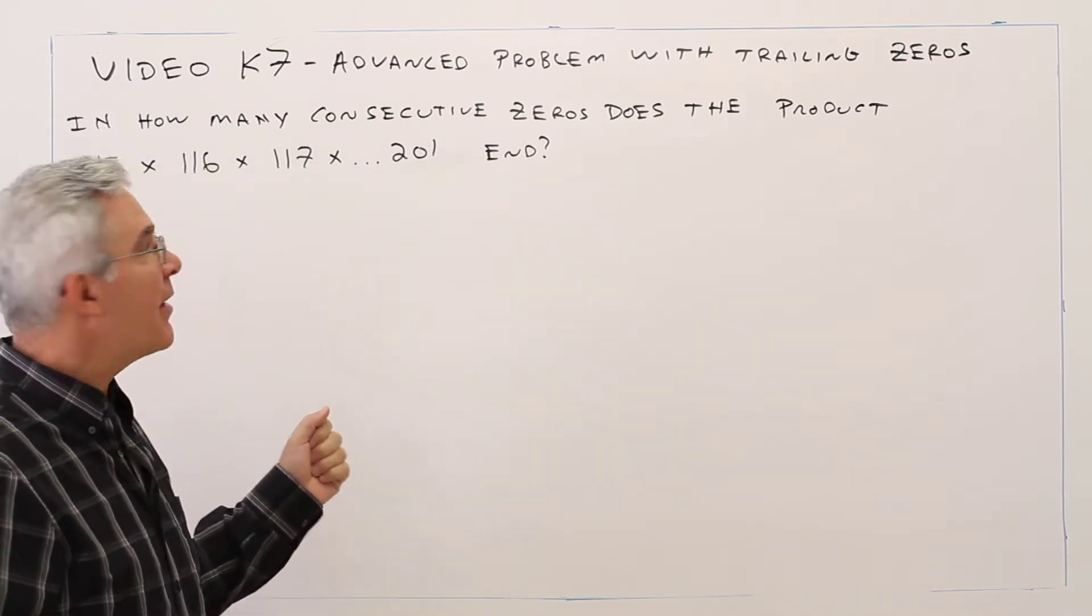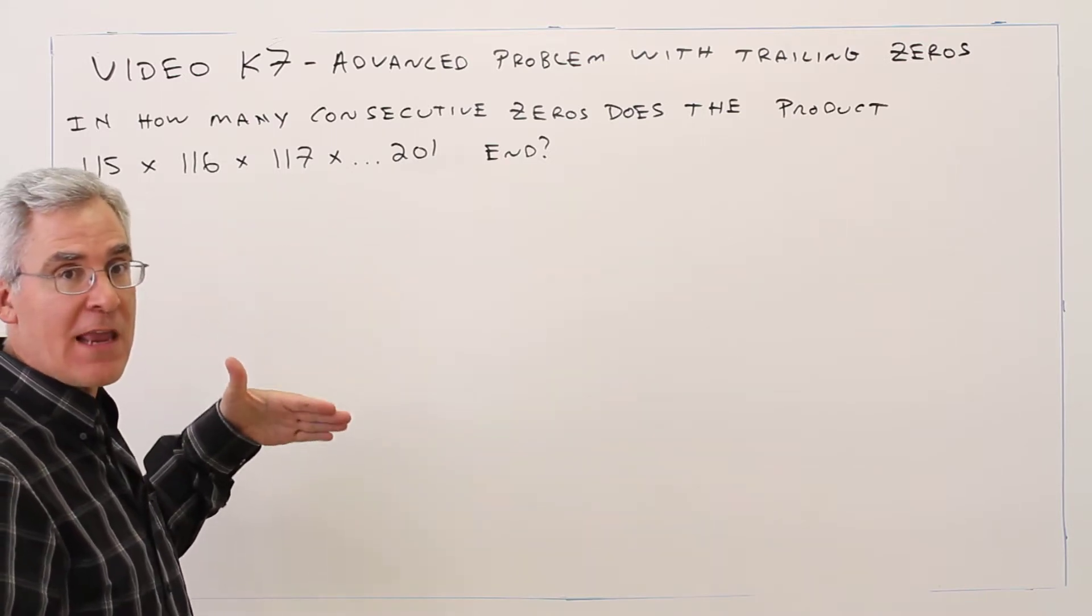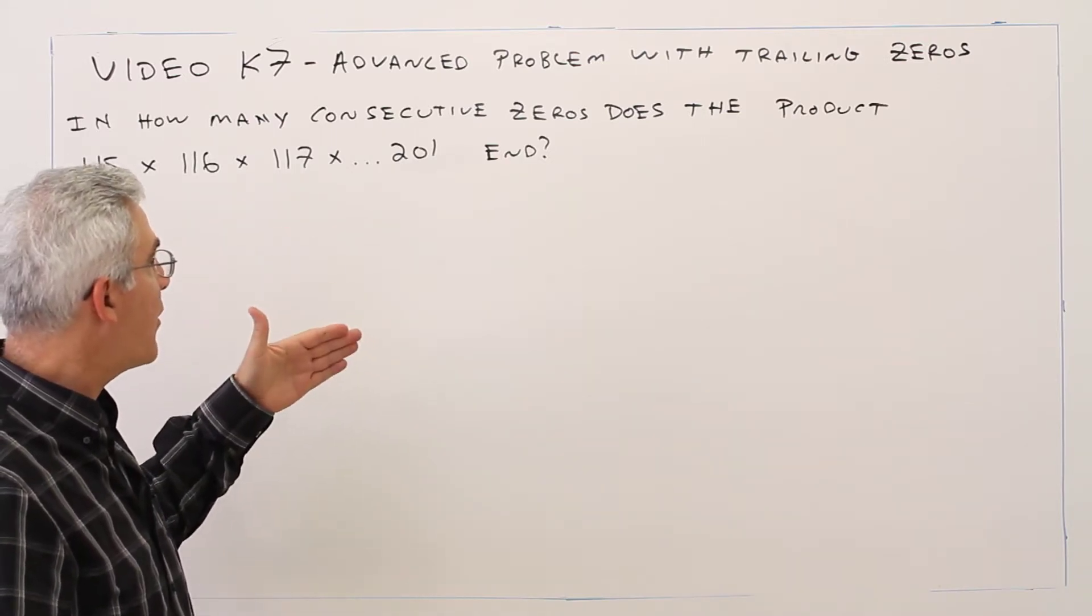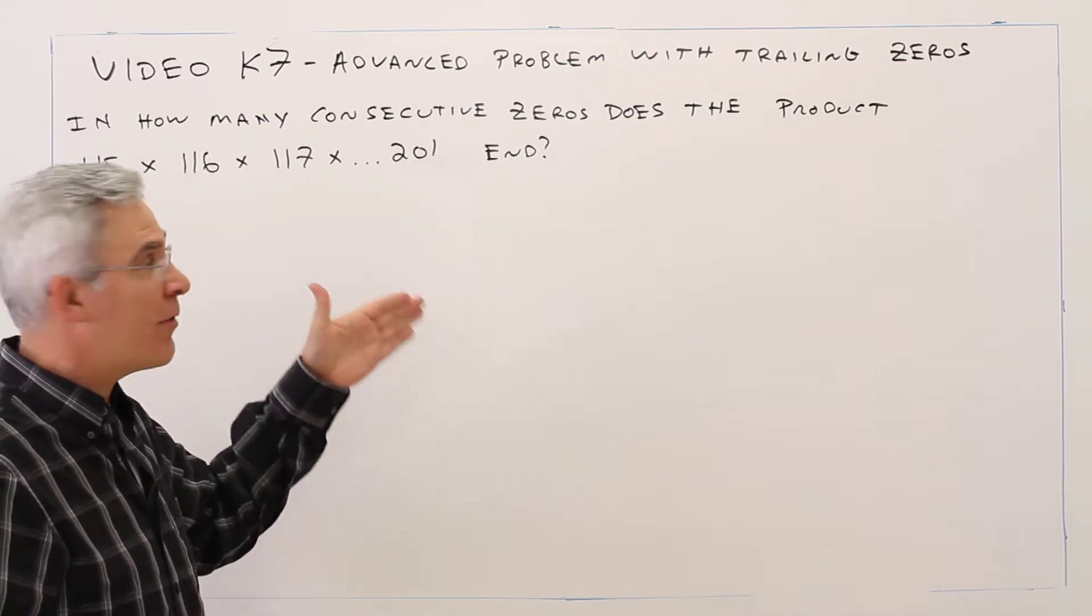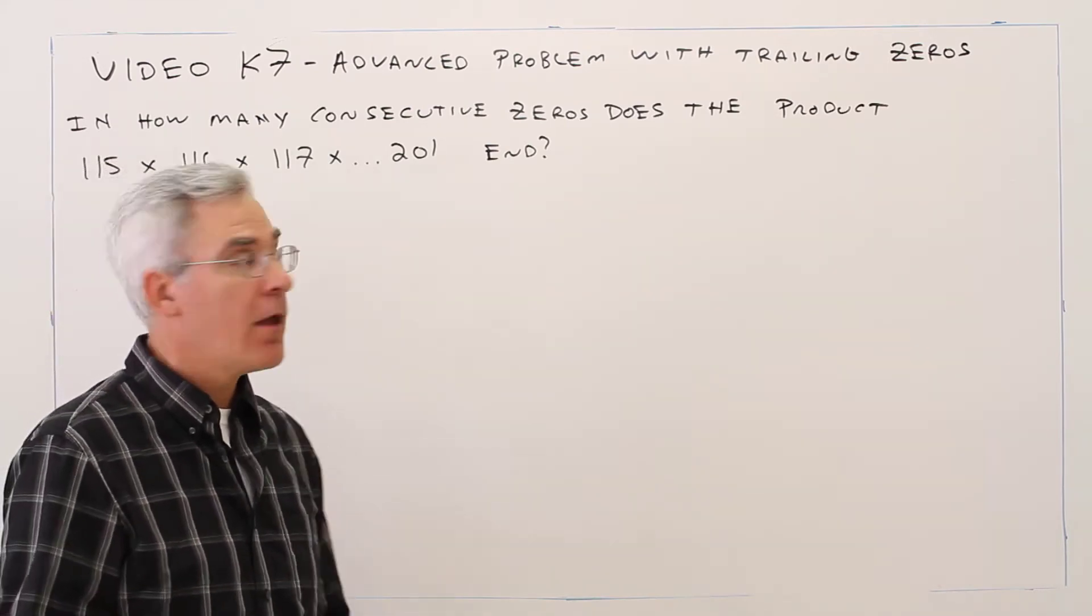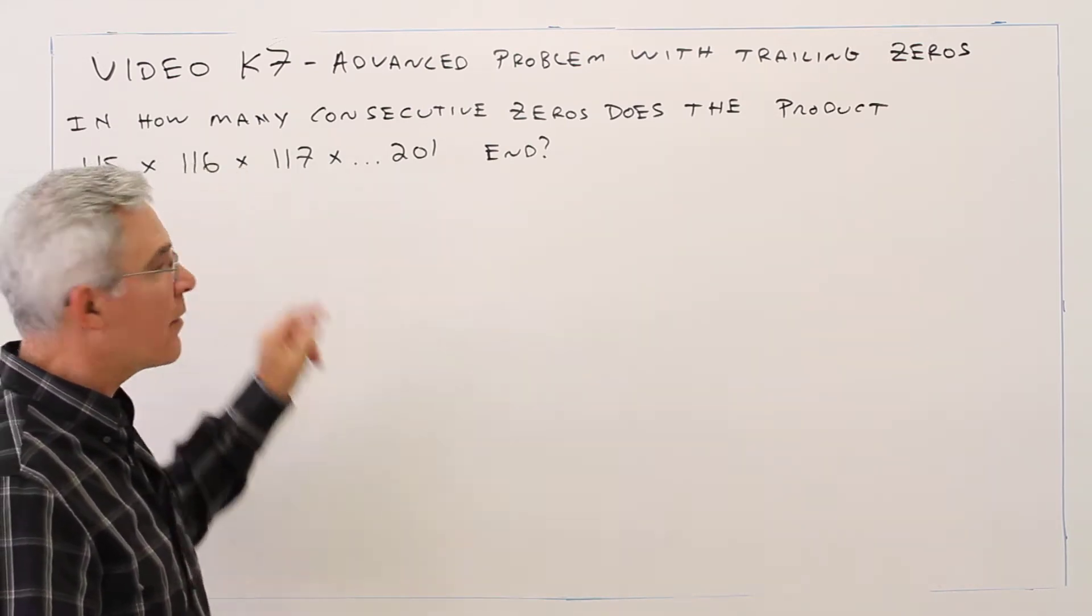In how many consecutive zeros does the product 115 × 116 × 117 × ... × 201 end? This is not quite a factorial.